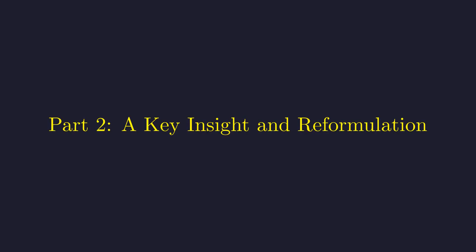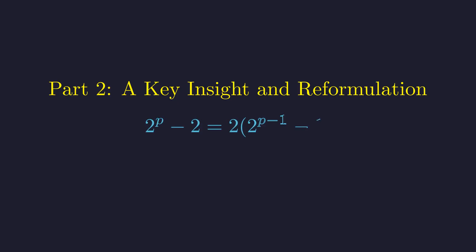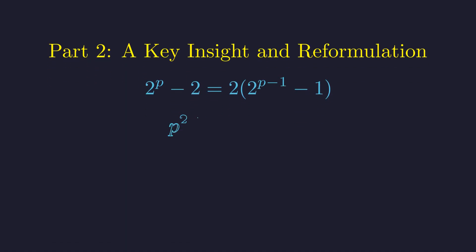Since p equals 2 fails our test, we can focus exclusively on odd primes. This allows us to make a crucial observation that will transform our approach. Let's factor out the common factor of 2 from our expression. This seemingly simple step will unlock the entire problem. Our condition becomes, p squared must divide 2 times the quantity, 2 to the power of p minus 1, minus 1.